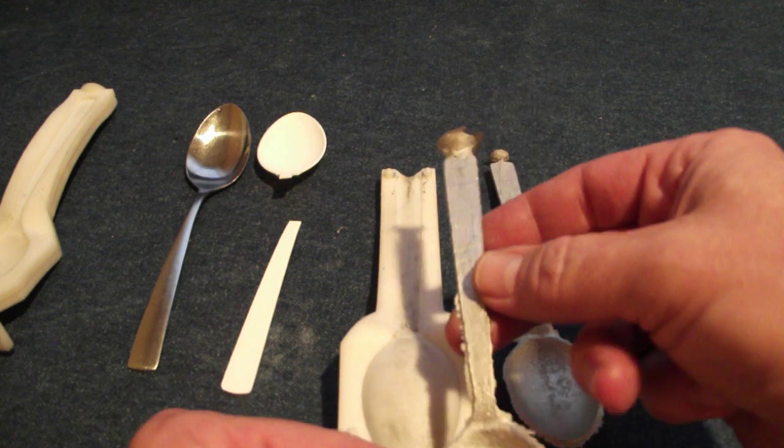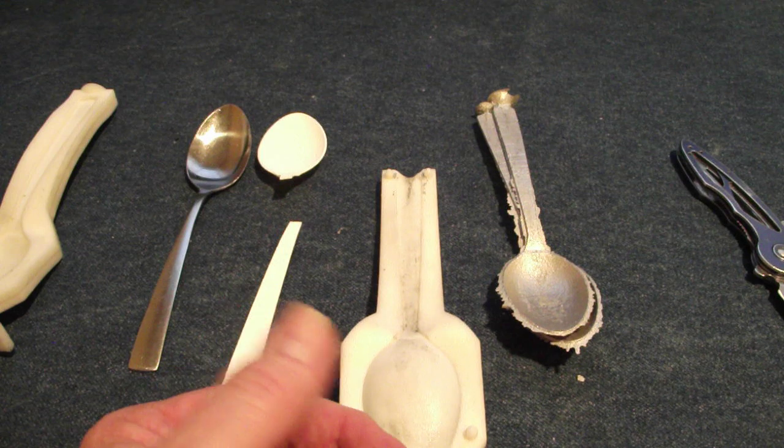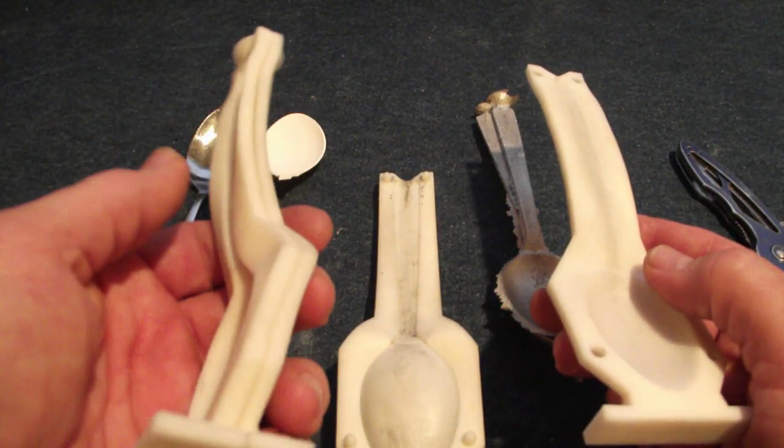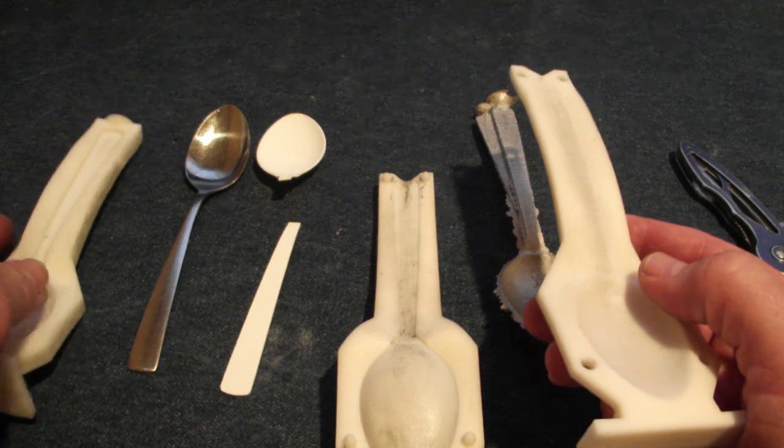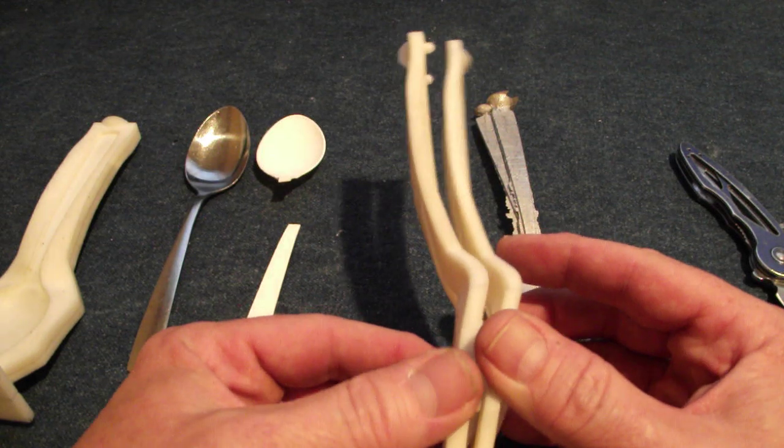And voila, a metal spoon. The advantage to this over sand casting and other types of casting is obviously you can create as many molds as you want. These molds are relatively cheap compared to other types of casting, and you can pour one after the other after the other.